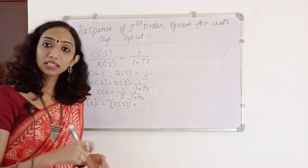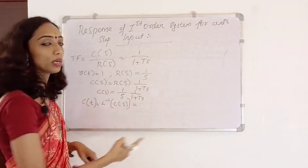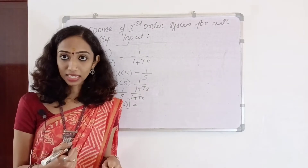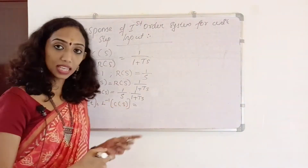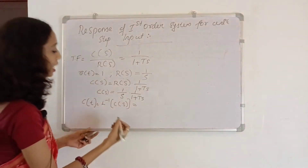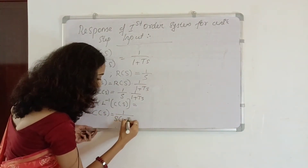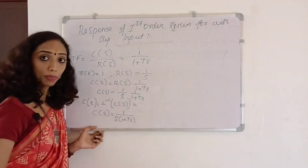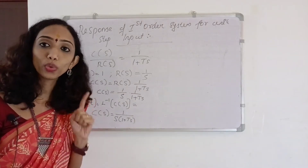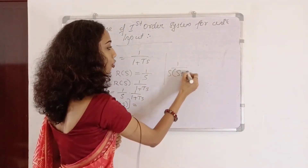What we have done is partial fraction. We have to apply inverse Laplace. For 1 by S into (1 plus T·S), we need to get the partial fraction. The denominator needs to be in S into S plus A format. So the denominator in terms of S into (S plus A) format.